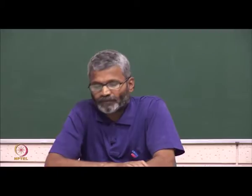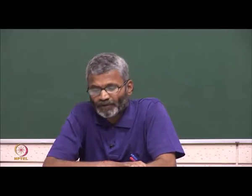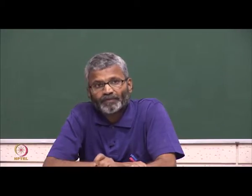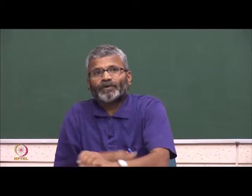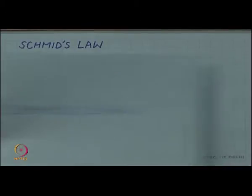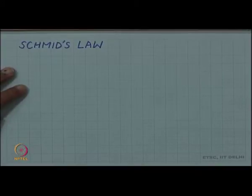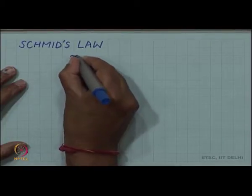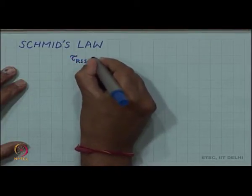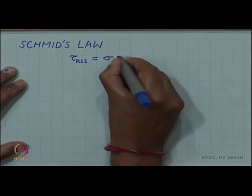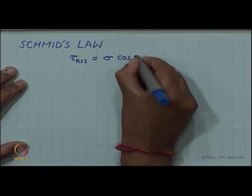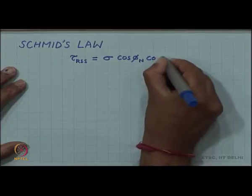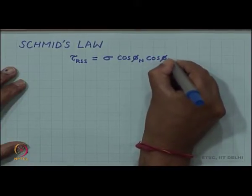In the last video, we discussed the important concept of resolved shear stress and critical resolved shear stress. Related to this critical resolved shear stress, there is a very interesting law called Schmid's law. Let us look at that now. Essentially, what we saw is that the resolved shear stress is given in terms of the applied tensile stress times a geometrical factor cos φ_n times cos φ_d.